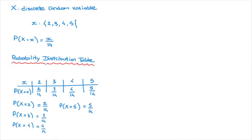Tables like this are very useful because at a quick glance we can see all the probabilities associated with the discrete random variable. For instance, we can see that the value most likely to occur is 5, since it has the highest probability of 5/14. This table is sometimes loosely called the probability distribution, as it contains all the information from the probability distribution function.